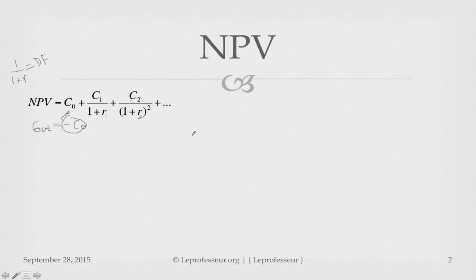So this is what we learned in the previous video lecture about net present value: cash flow in the present plus expected future cash flow for each period, divided by one plus the discount rate.